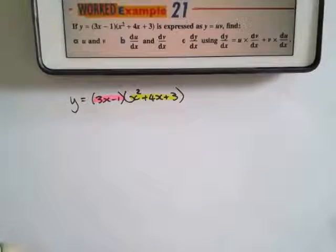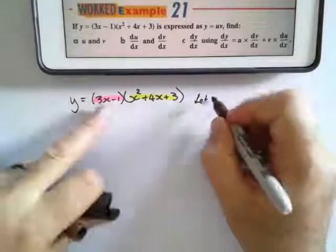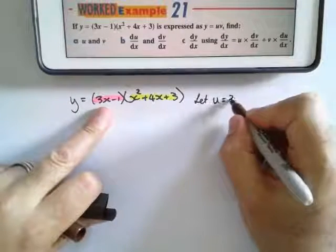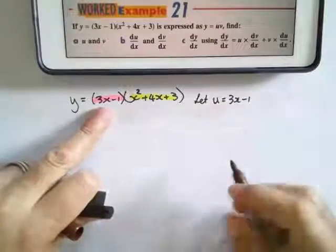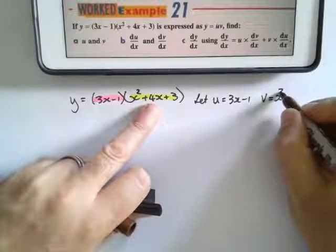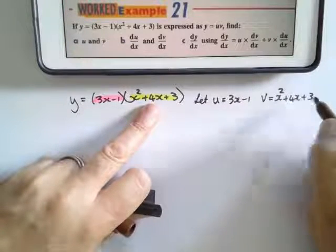What I'm going to do is write let u equal one of them, so let u equal 3x minus 1, and I'm going to say let v equals the other one: x squared plus 4x plus 3.